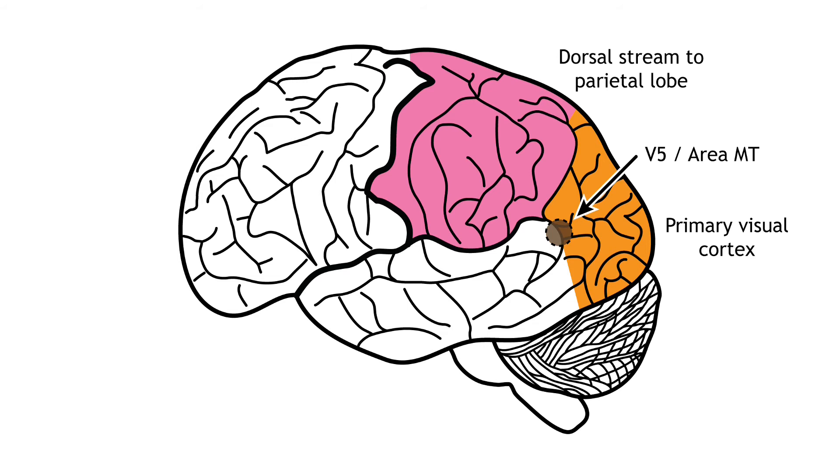As an example, remember the receptive fields in the primary visual cortex were activated by lines at a specific orientation. Like that, in V5, the neurons would be activated by lines moving in a specific direction.